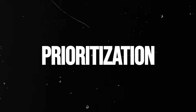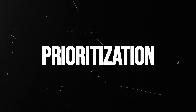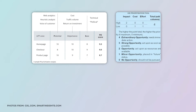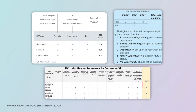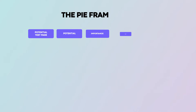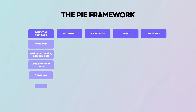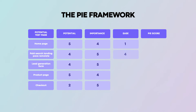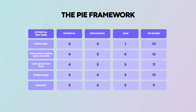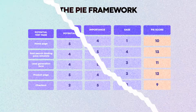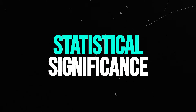To prioritize what to test, you'll get ideas from everywhere. There are many frameworks out there — PI, ICE, PXL — but what they all do is provide a consistent set of criteria to identify which items to test first that might be most impactful to the organization, so you can get started right now and use limited resources to make an impact quickly.